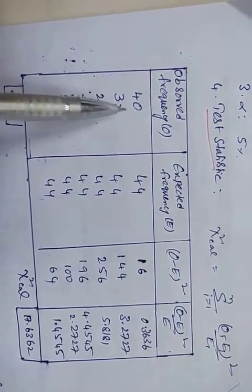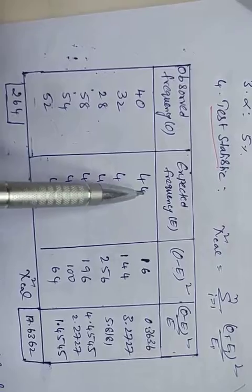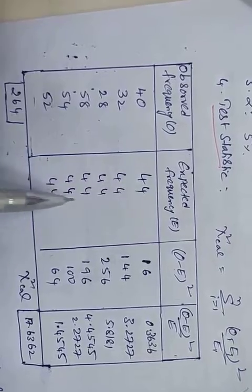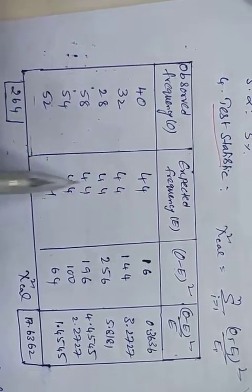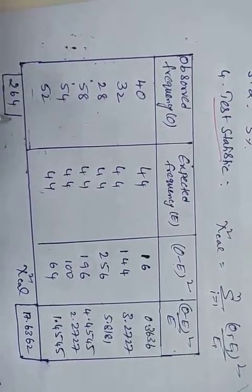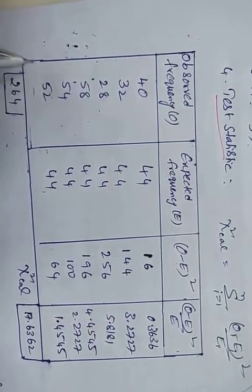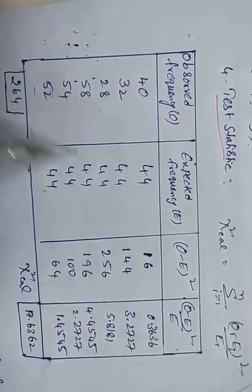The expected frequency is calculated as 264 divided by 6, which equals 44. So the expected frequency for each face is 44.